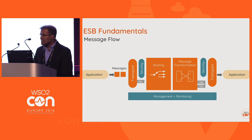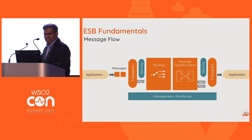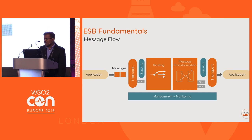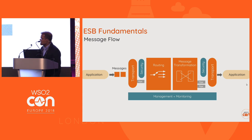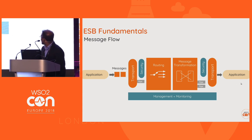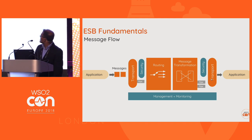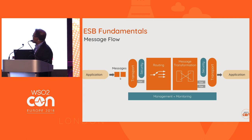After processing in the routing and transformation engine, we send the message to a back-end application. Within the ESB engine, we decide where to send the message and dispatch it to the back-end application. When that application responds, the response goes through the same pipeline and returns to the initial client.